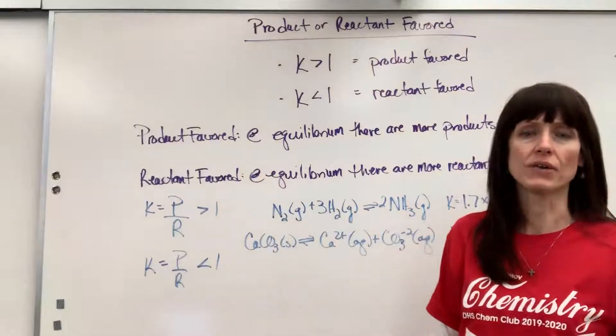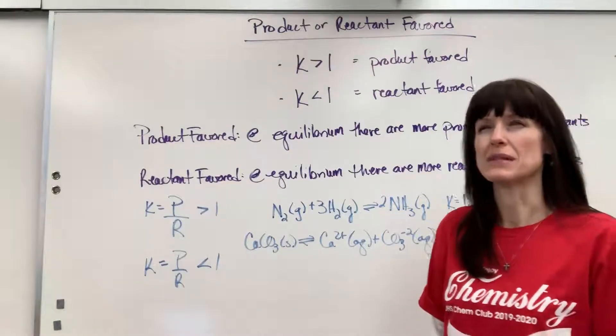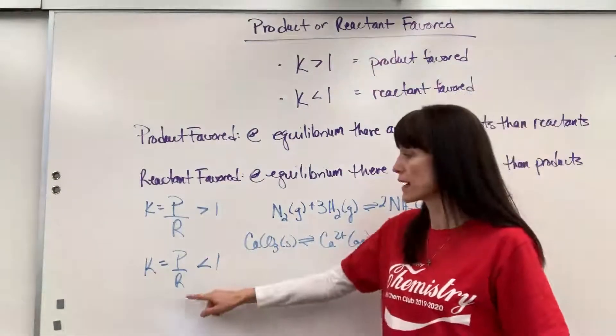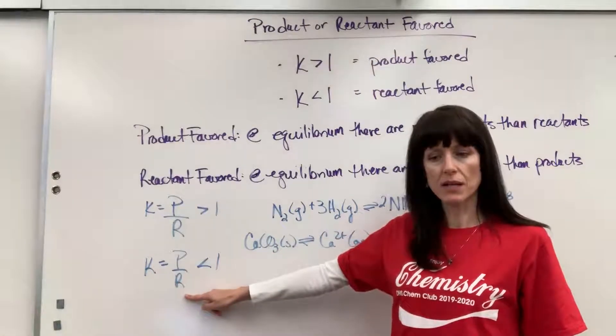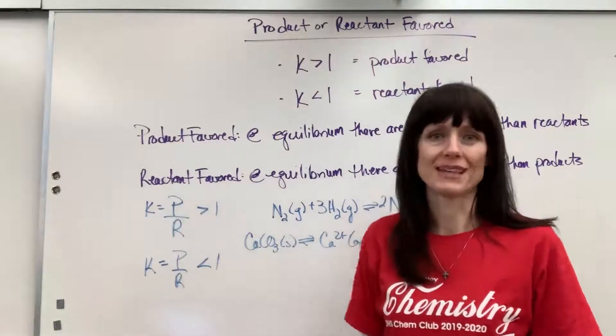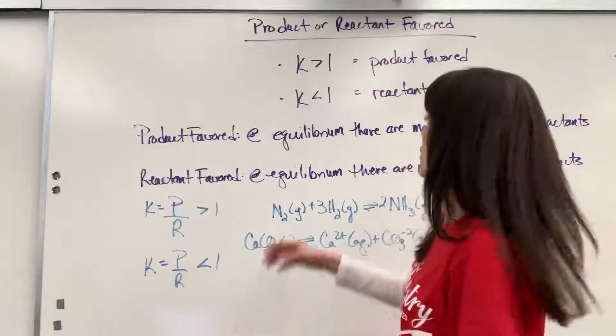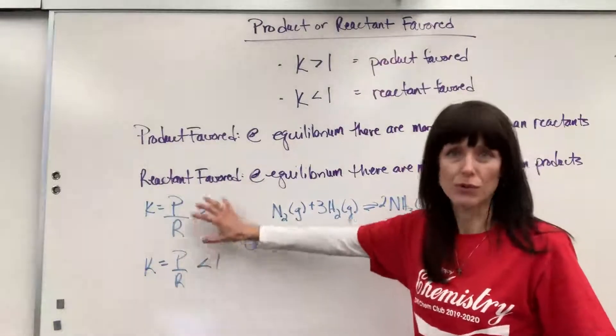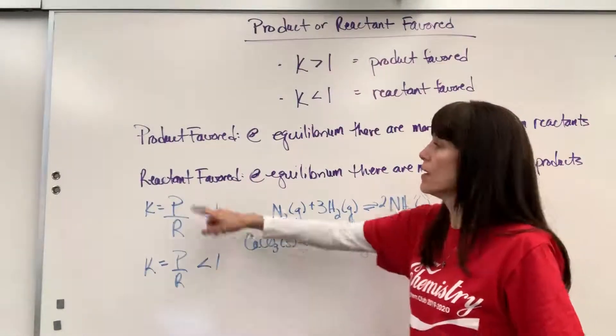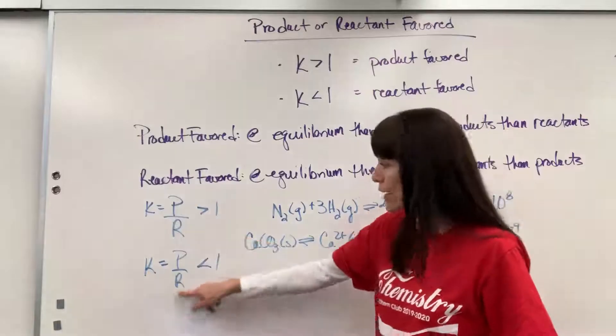So again, you can think it out. Reactant favored K, that means I have more reactants. Products over reactants, large number in the denominator, large reactants, K is less than one. So once you get this, you wrap your brain around this amount, more products greater than one, more reactants.